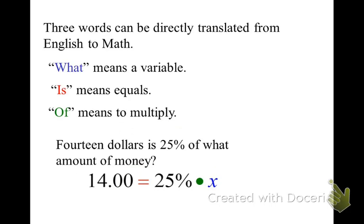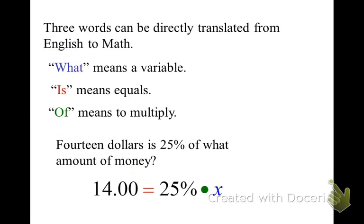So $14 is 25% of what amount of money? The 14 is... so the equal sign is the is, and the of is the multiplication symbol.